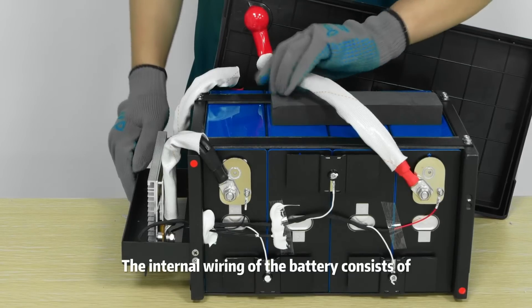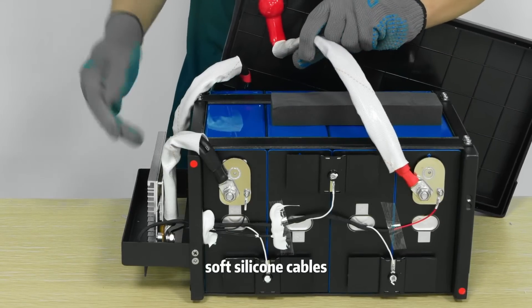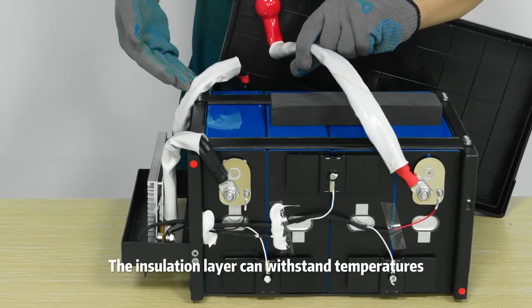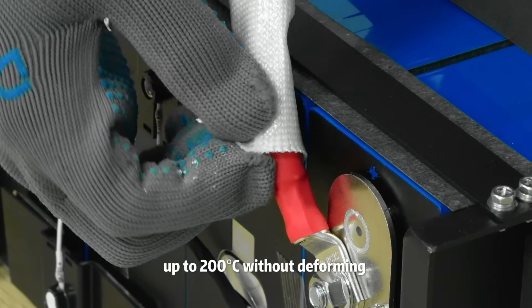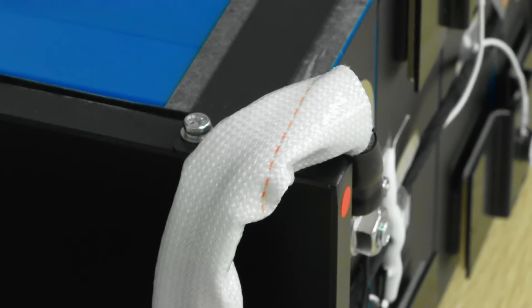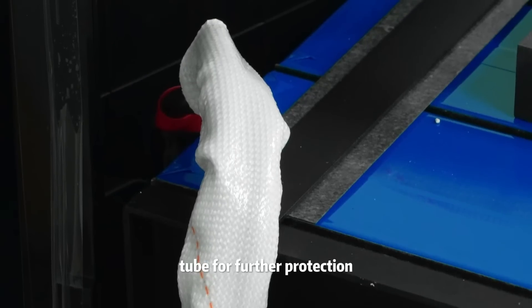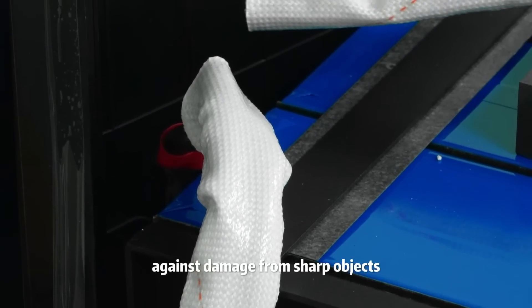The internal wiring of the battery consists of high-temperature soft silicone cables. The insulation layer can withstand temperatures up to 200 degrees Celsius without deforming. Additionally, the wiring is covered with a yellow wax tube for further protection against damage from sharp objects.